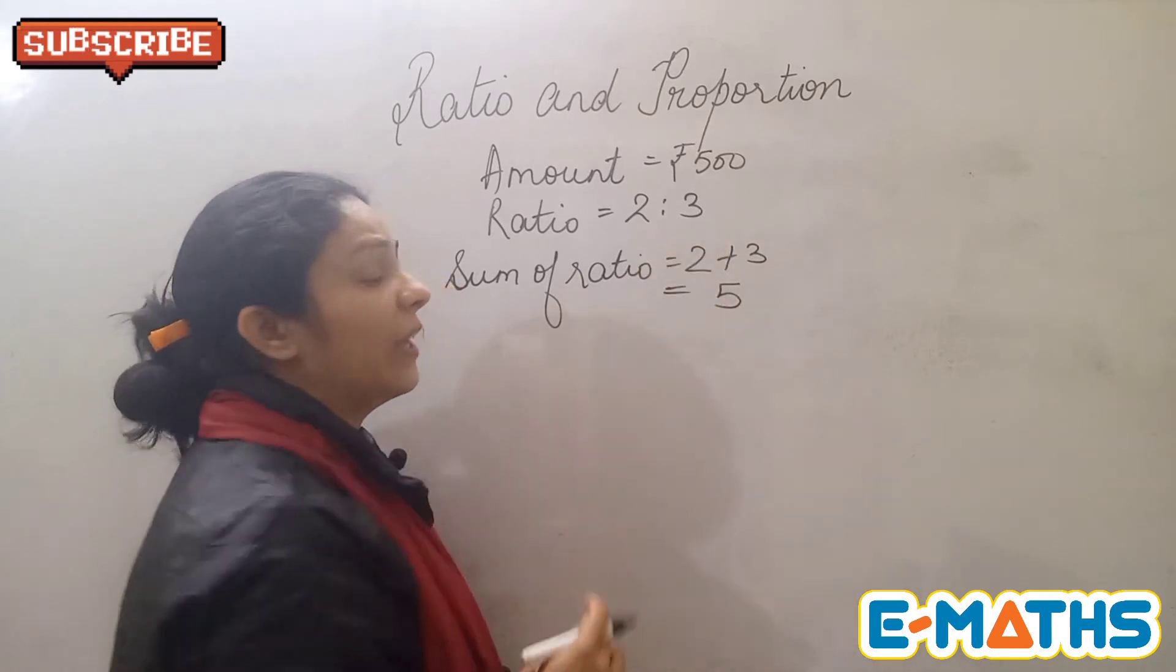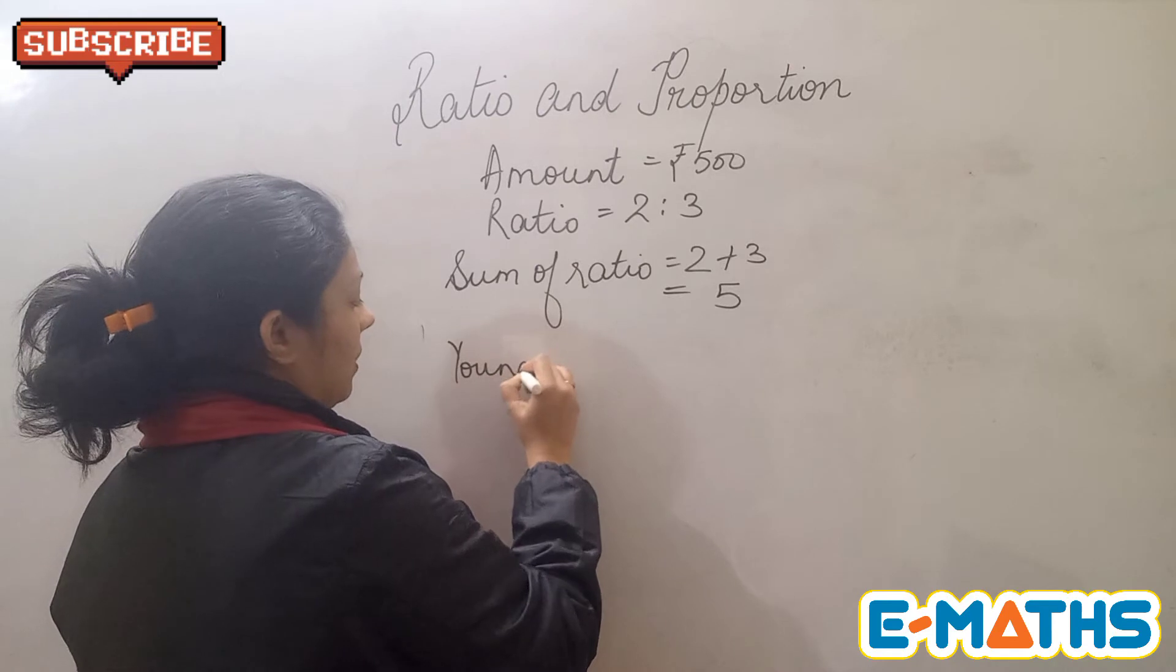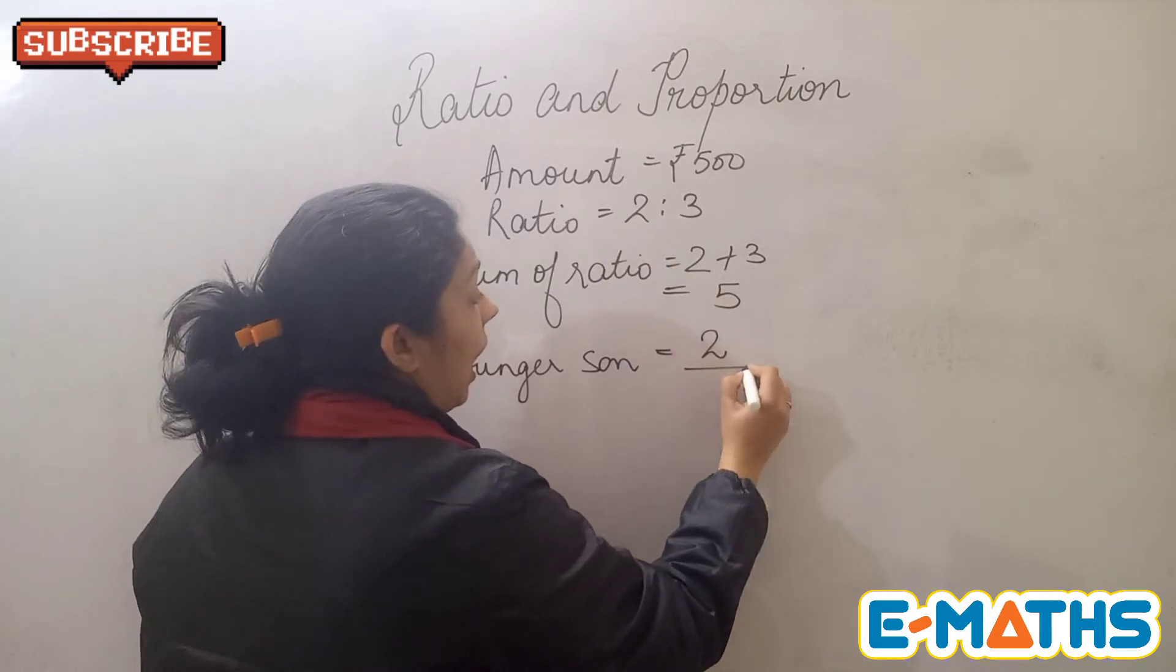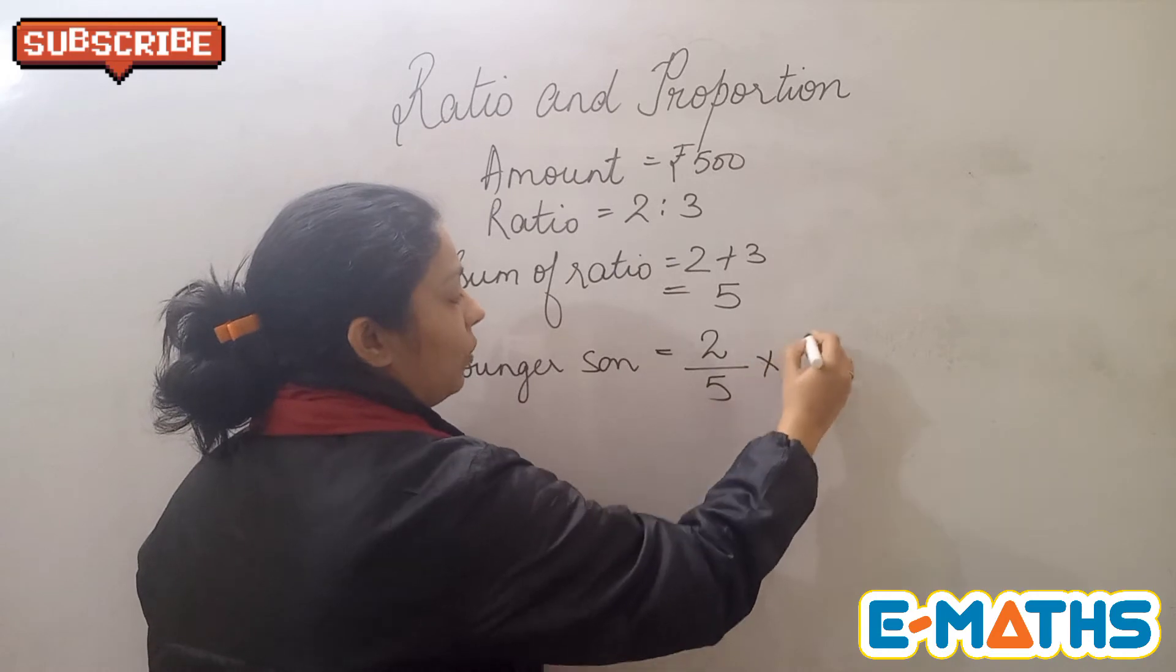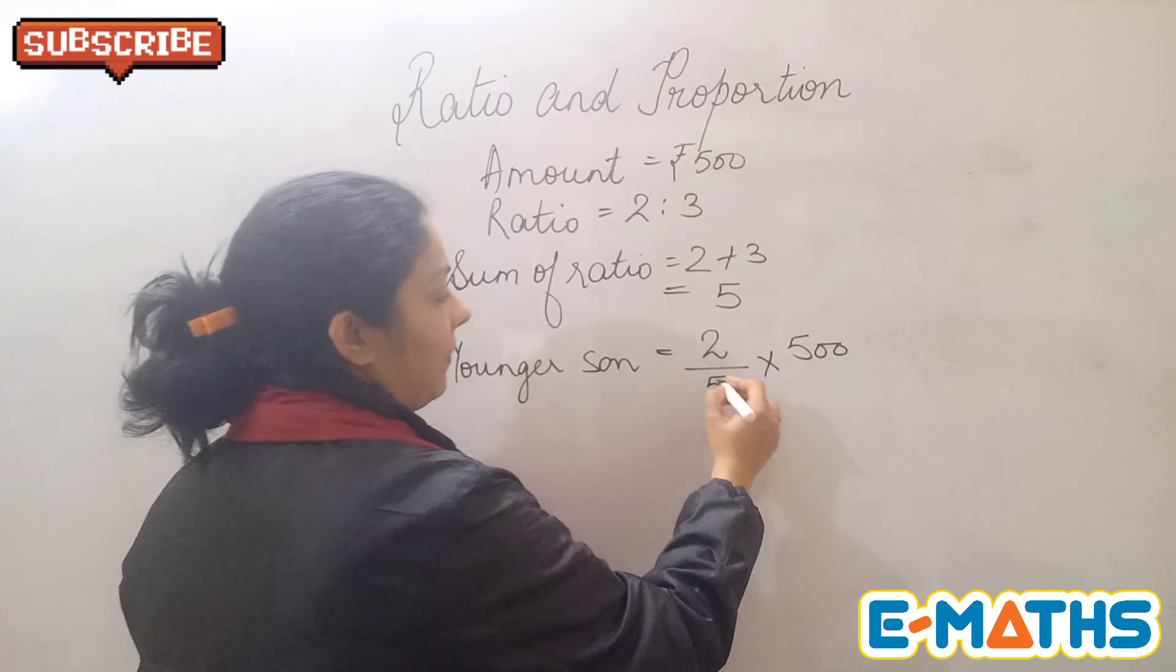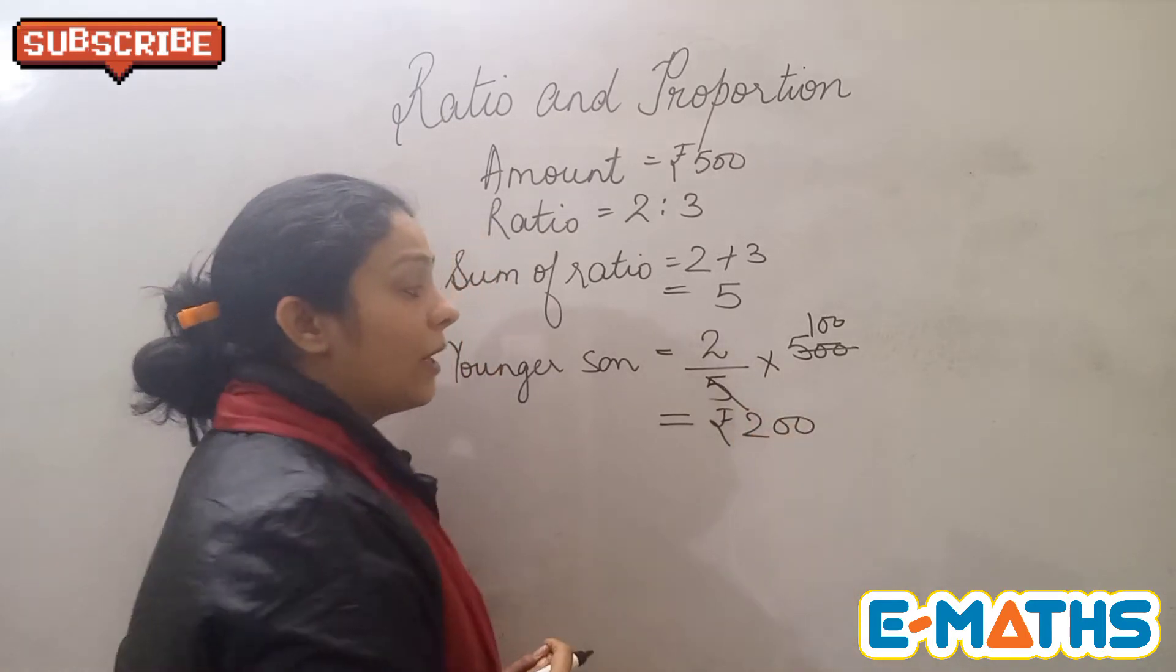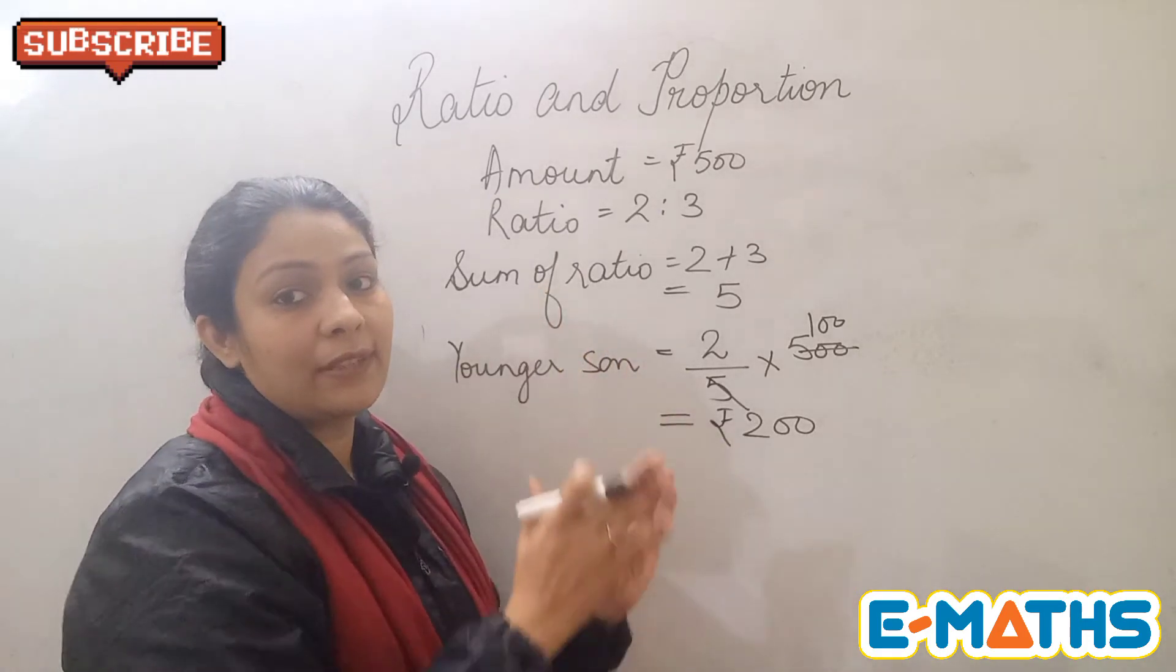Now when you will be finding it for the younger brother, the younger son is getting the first part of the ratio that is 2 upon the total of the ratio that is 5 into the total amount that the guest has given. Now you can simplify it. 500 and then 2 into 100 is 200. So the younger son is going to get 200.